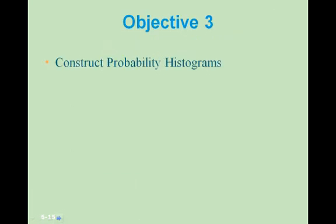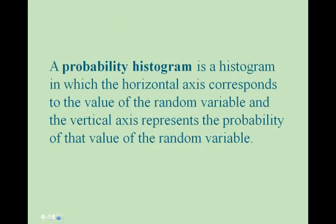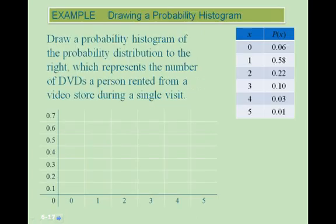Objective 3: construct probability histograms. A probability histogram is a histogram in which the horizontal axis corresponds to the value of the random variable, and the vertical axis represents the probability of that value of the random variable. We want to draw a probability histogram for the probability distribution of the number of DVDs a person rented from a video store during a single visit. This is similar to a frequency histogram, but the vertical axis represents probability rather than relative frequency.